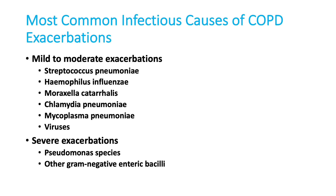The most common infectious causes for COPD exacerbation include Streptococcus, H. influenzae, Moraxella, Chlamydia, Mycoplasma, and various viruses. Severe exacerbations can be due to Pseudomonas and other gram-negative enteric bacilli. Common lung infections in a normal person are mainly gram-positive, but in COPD or a damaged lung you can get both gram-positive and gram-negative infections, including H. influenzae and Moraxella, which are not commonly seen in a normal lung.